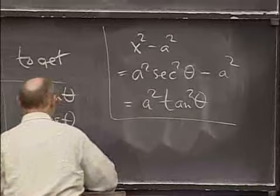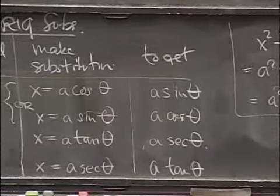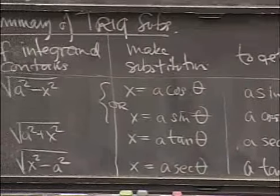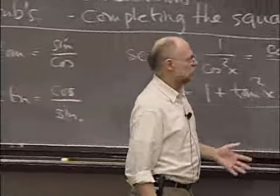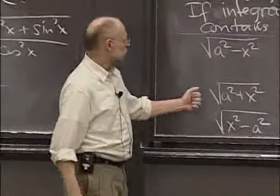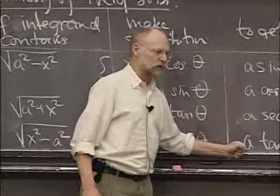And so that's what you get, a times the tangent of theta. After I take the square root, I get a times the tangent of theta. So these are the three basic trig substitution forms, where trig substitutions are useful to get rid of expressions like this and replace them by trigonometric expressions.